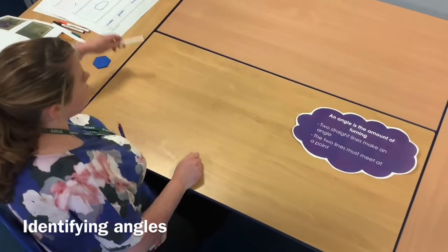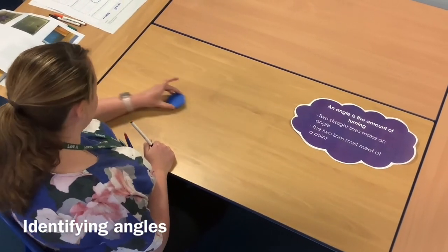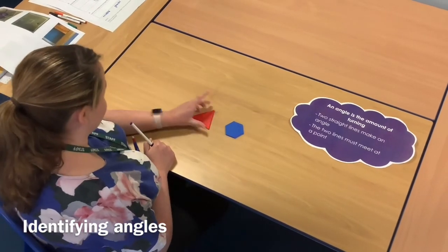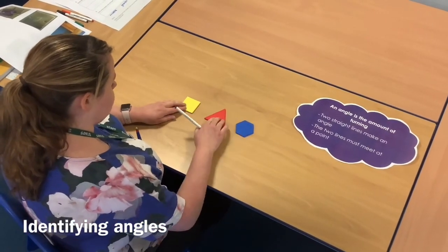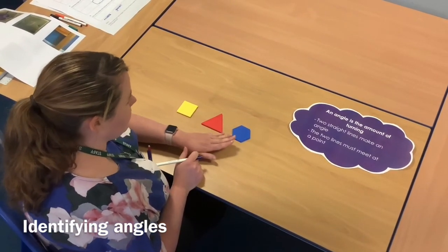Today, we're going to be identifying some angles. So I'm going to start off by looking at three different shapes. So I've got a square, a triangle and a hexagon.